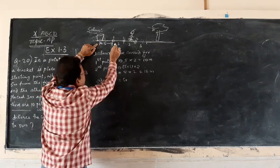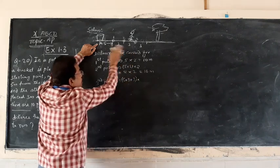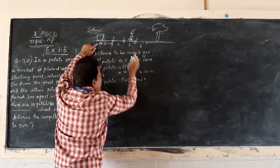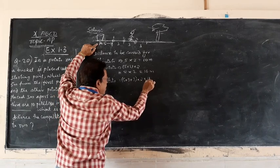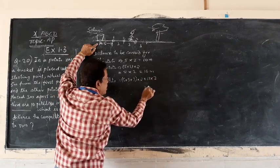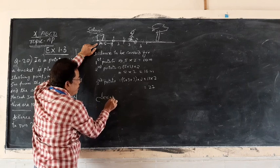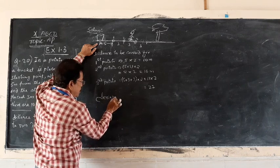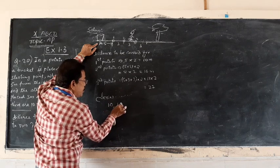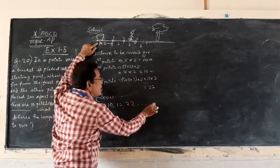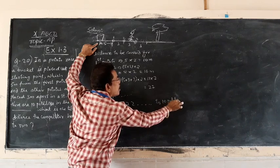For the third potato: 5 plus 3 plus 3, then 2 times he has to run, that is times 2, one for putting the potato, one for returning, 11 times 2, that is 22 meters. So the series is 10, 16, 22 for 10 potatoes.